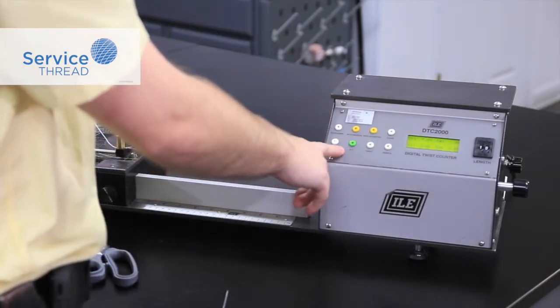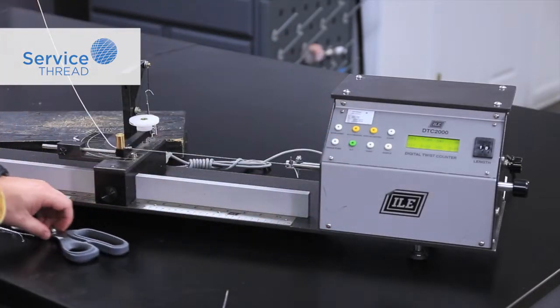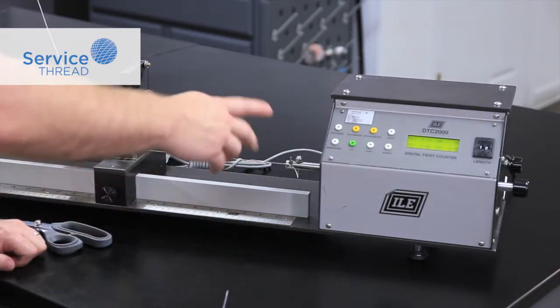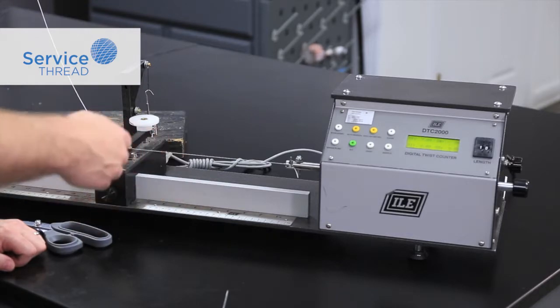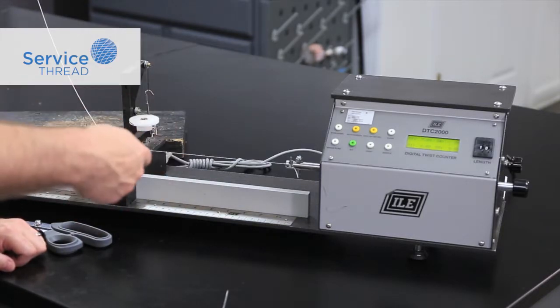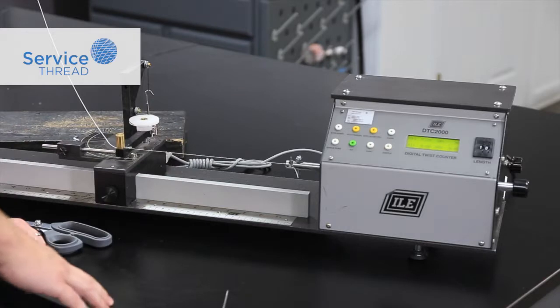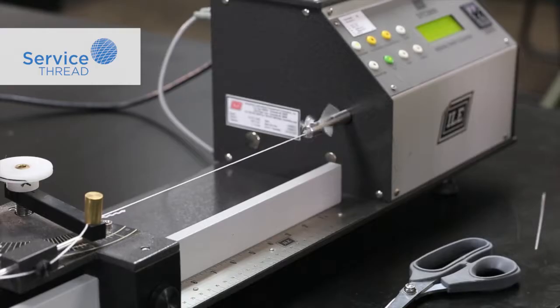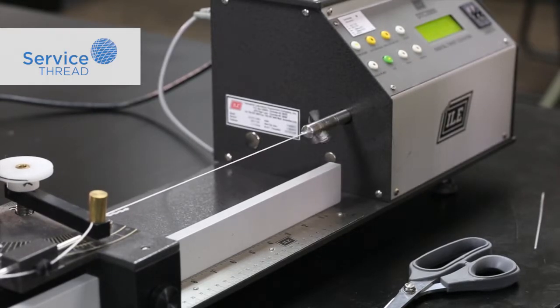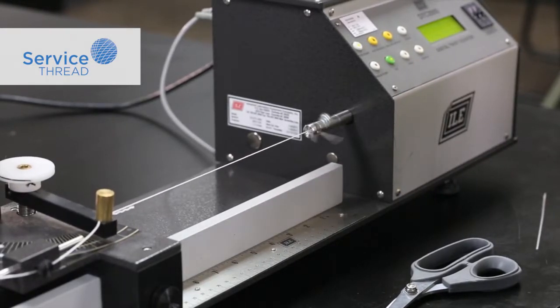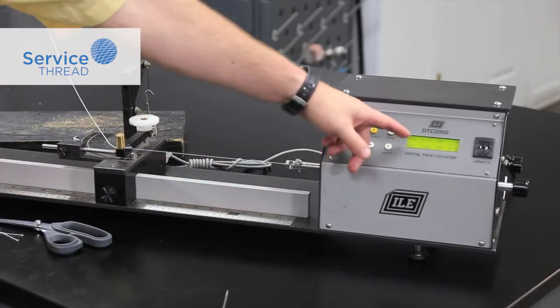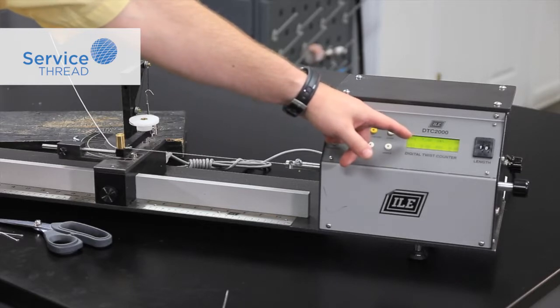This particular test is in the opposite direction and we're going to do the single yarn by the twist and re-twist method. This machine will automatically calculate the twist by untwisting it flat and then re-twisting it in the opposite direction. This shows that our twist for the single yarn was nine turns per inch in the S direction.